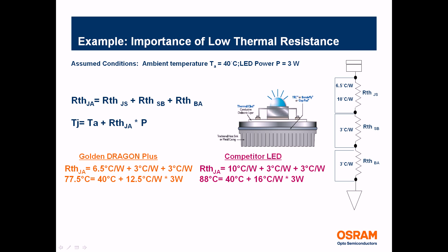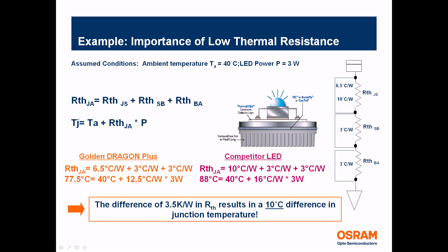Knowing the total thermal resistance, we multiply that by the LED's power and add the ambient temperature to get the junction temperature. For the Golden Dragon with 6.5 degrees C per watt, operating in a system at 40 degrees C ambient yields a junction temperature of 77.5 degrees C. The other LED at 10 degrees C per watt yields an 88 degrees C junction temperature. So this mere 3.5 degrees C per watt difference in thermal resistance results in a 10 degree difference in junction temperature.